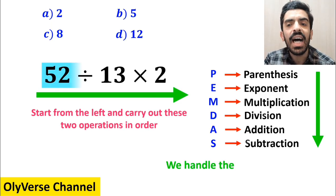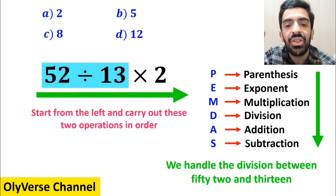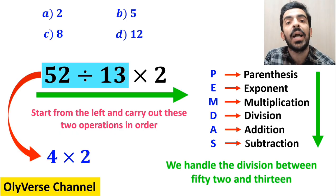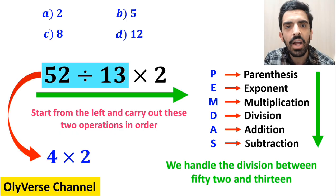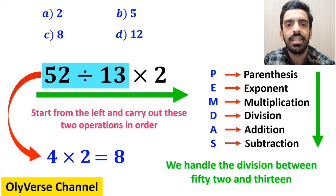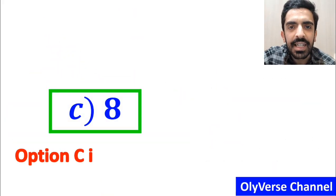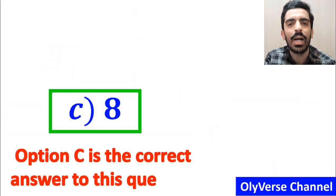So, first we handle the division between 52 and 13, which simplifies this expression to 4 multiplied by 2. And finally, we get the answer 8. Therefore, option C is the correct answer to this question.